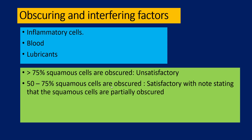The next factor is obscuring and interfering factors. The major factors which can obscure a smear are inflammatory cells, blood, and lubricants. If a smear has greater than 75% of squamous cells obscured, it is unsatisfactory. Please note — it is 75% of the squamous cells and not 75% of the smear area. If 50 to 75% of the squamous cells are obscured, it is still satisfactory, but you have to add a note stating this fact in your report, indicating to the clinician that there were some hindrances in the assessment.